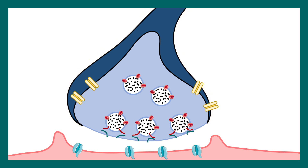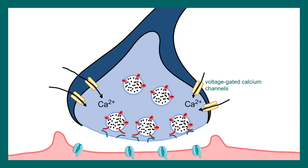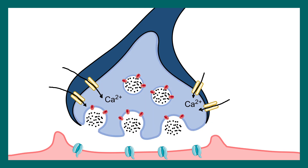Once the action potential reaches the nerve terminal it allows the voltage-gated calcium channels to open, leading to a large calcium influx. The extracellular side has calcium in the order of millimolars whereas the intracellular side generally has calcium in the order of nanomolars. This huge jump in calcium level at the synaptic end drives the vesicular SNARE and target membrane SNARE fusion via a complex machinery, leading to vesicle fusion and neurotransmitter release into the synaptic cleft.